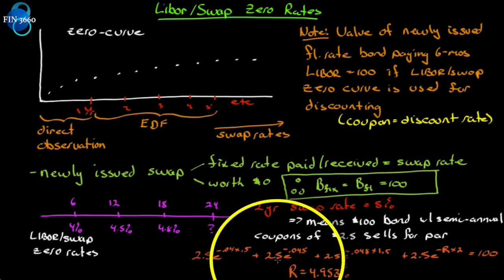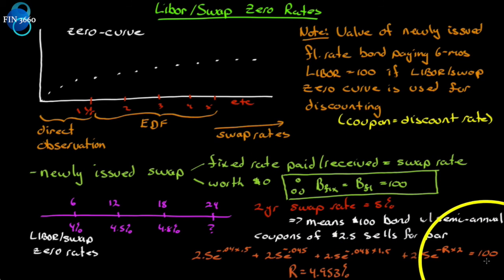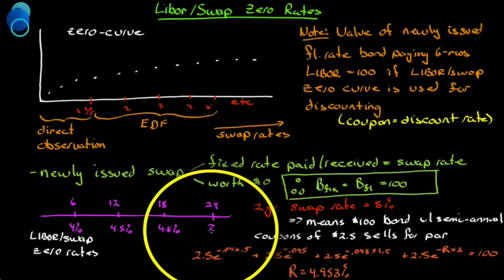We can use the observed zeros that we have for six, twelve, and eighteen months and calculate the twenty-four-month zero by discounting 2.5, which is the fixed rate on this bond. That's a five percent semi-annual, so 2.5 for four payments. We know it must equal par by this equation. We can observe the zero rate for six months, one year, and one and a half years. There's our wild card. We need to solve for R, what the two-year zero is. Take the natural log of both sides to take the power term down to the line and solve for R. You'll get 4.953 percent.